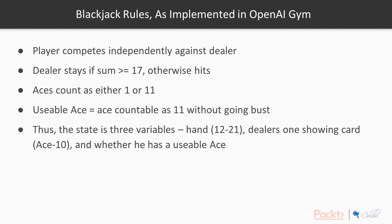The state is actually three variables: you have the user's hand, which is from 12 to 21, the dealer's one showing card, which is from ace to 10, and whether the user has a usable ace. Because the usable ace can count as 1 or 11, if the user's hand is below 11 you always hit — there's no difference in strategy, which means we can save time computationally and not compute value functions or state-action estimates for that part of the state.